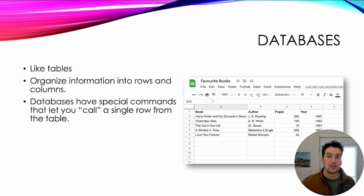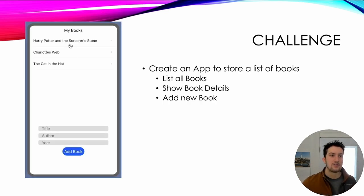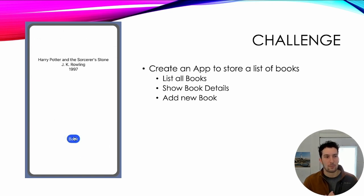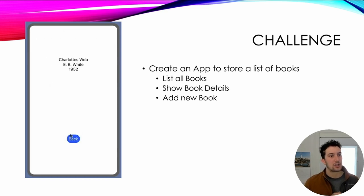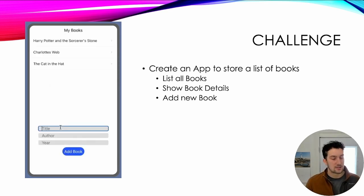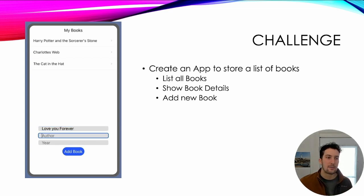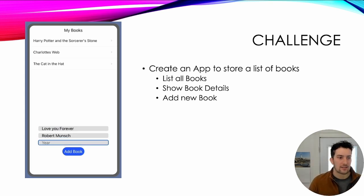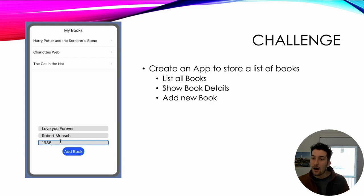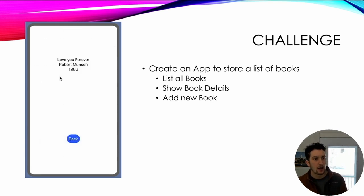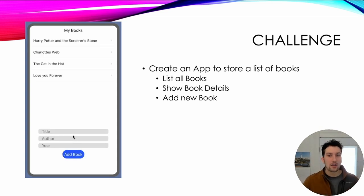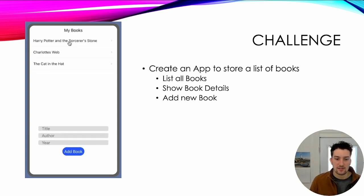What I want to challenge you to do here is create an app to store a list of books. When you click on a book, it shows you the title, author, and the year it was made. I also want you to try to add a new book. You can see this in the little video example here. I think this would be a good time to pause the video and give this a go in Thunkable. When you come back, I'll walk you through how to do this.